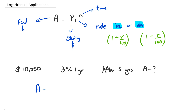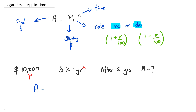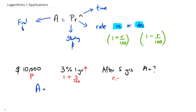So we put it into the formula. A is what we don't know. P is the money you started with — $10,000. It's a 3% increase, so we use 1 plus 3 over 100. N equals 5 years. When we substitute it all in, we get: A equals 10,000 multiplied by — now I know R can get a bit confusing since there's an R in the formula and an R in the rate.